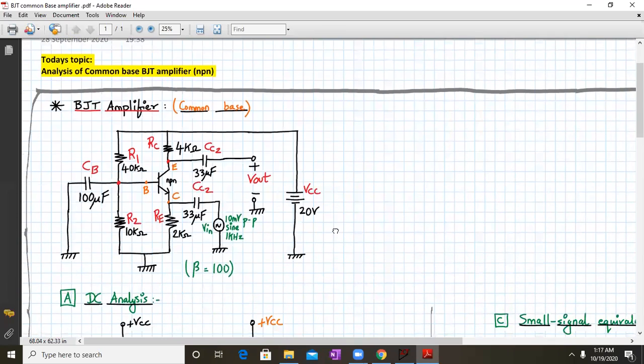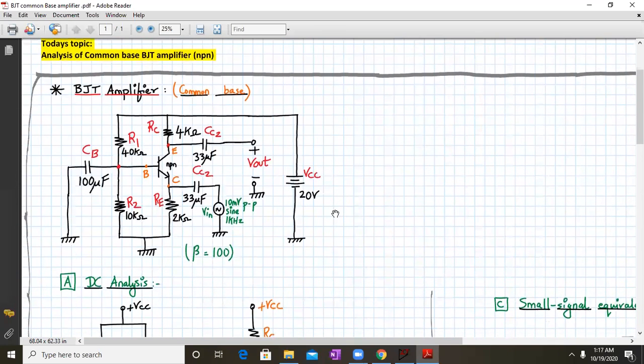So let us see the circuit diagram. In a common base amplifier, one distinguishing feature is that the input is applied to the collector terminal via the coupling capacitor CC1. By mistake, it is written CC2. It is capacitor CC1. And the output is taken from the emitter terminal, which is via coupling capacitor CC2 over here. So that's the output with respect to ground.